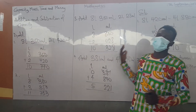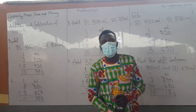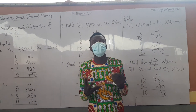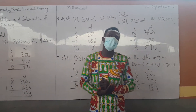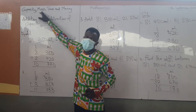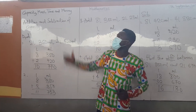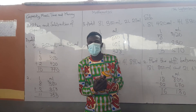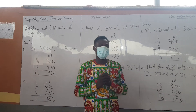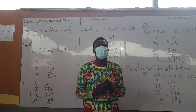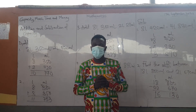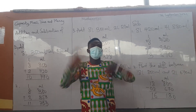So ladies and gentlemen, this is the addition and subtraction of capacity. Remember, capacity is simply the amount of substance that a container can hold. When we meet again, we will look at the addition and subtraction of mass and probably time. Thank you for staying tuned. Please don't forget to subscribe to my YouTube channel as Easy Mathematics and Instagram as Easy Mathematics 63. Hit the subscription button for more videos. God bless you. Bye bye.